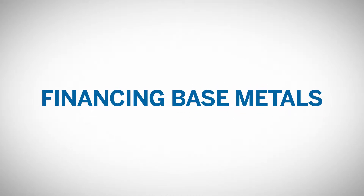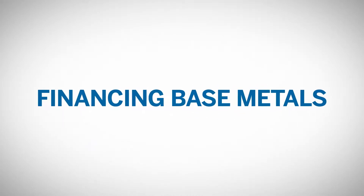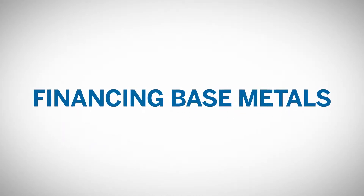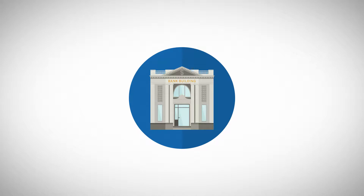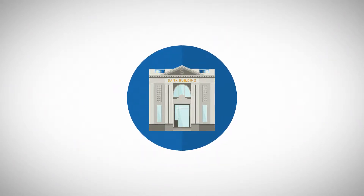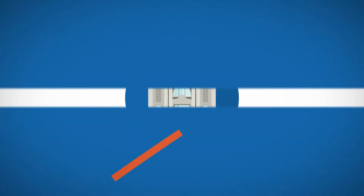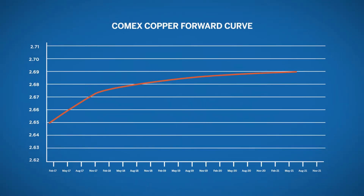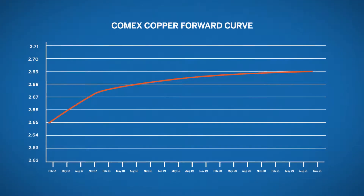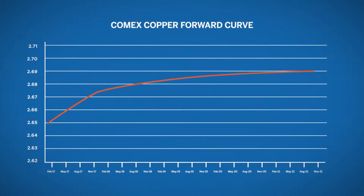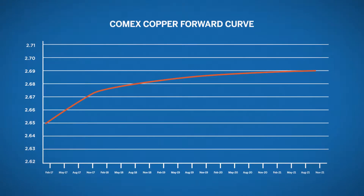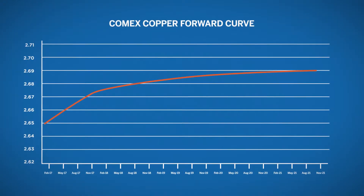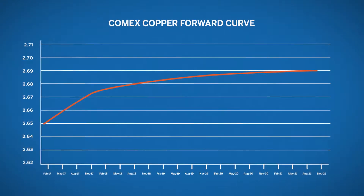Financing base metals: base metal warrants may be pledged as collateral to banks for loans. Banks that offer this service are often commodity trade finance banks. Traditionally, this financing of base metal warrants occurs when the market is in contango structure, where the futures contracts are trending at a premium to the spot price, generating an upward-sloping forward curve.